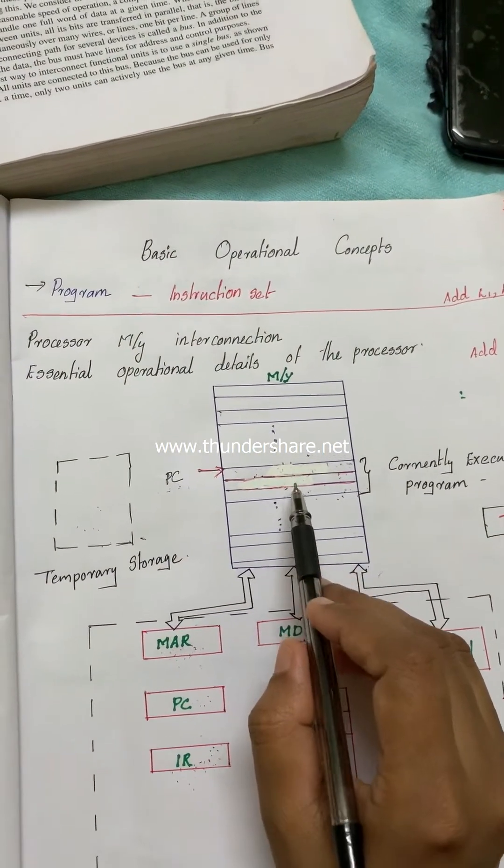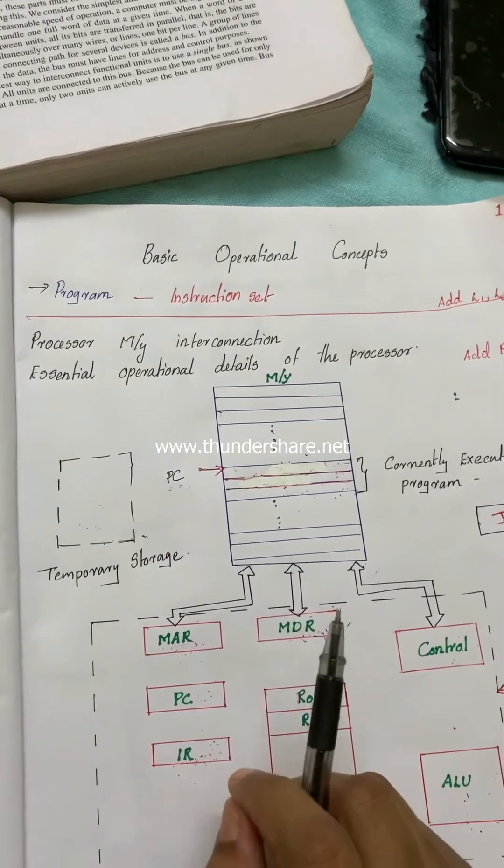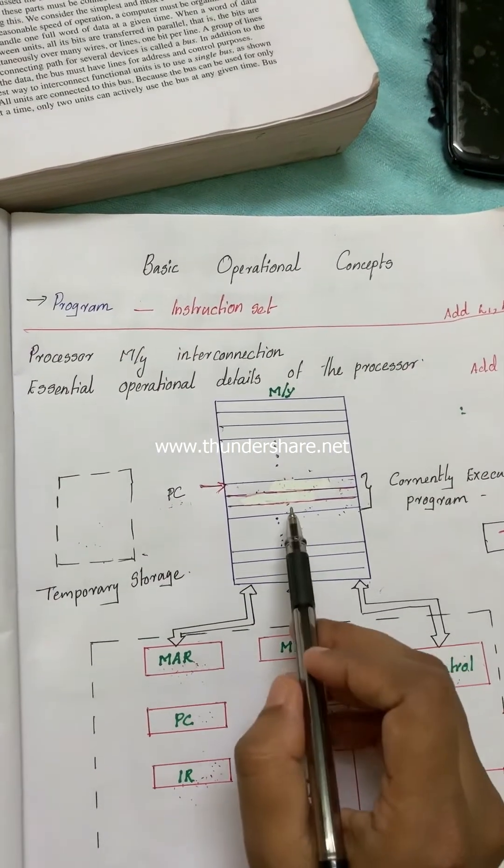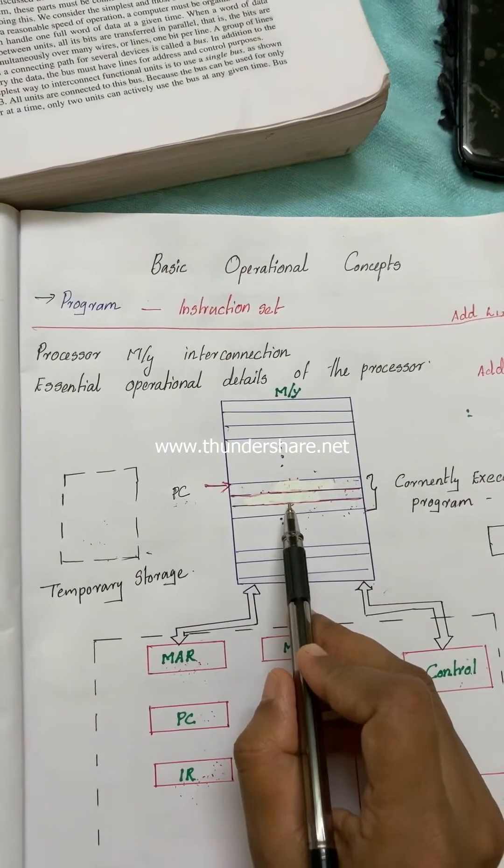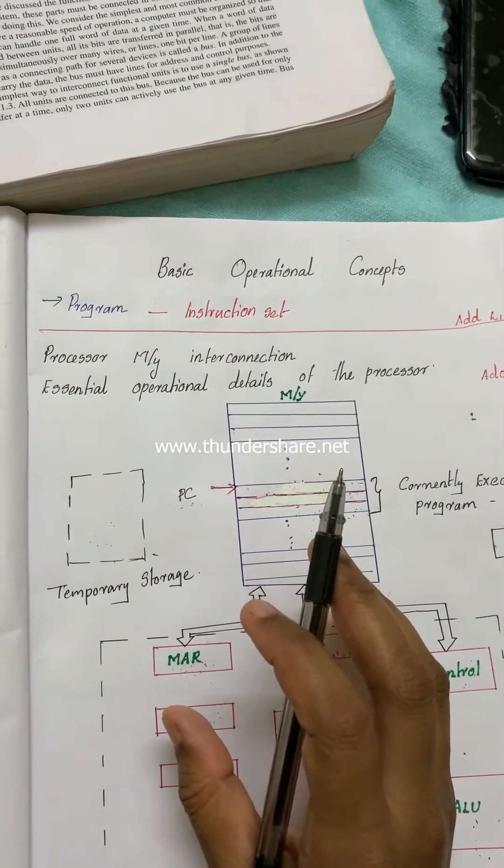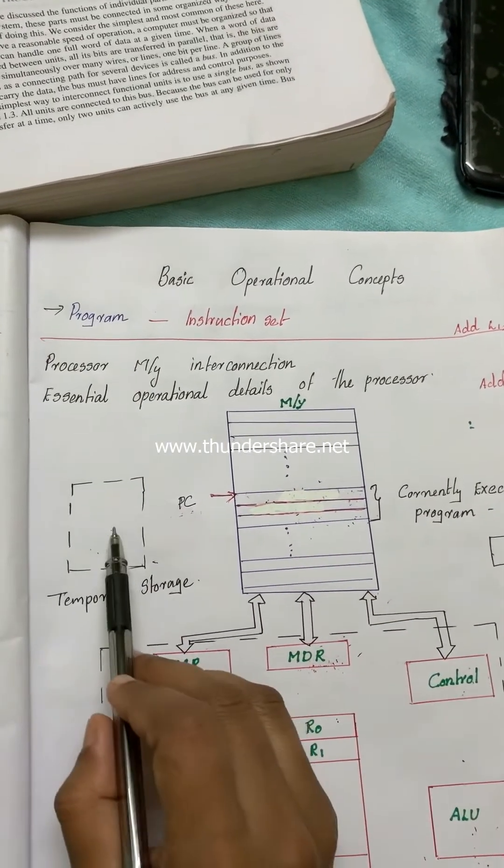The processor starts the execution of the interrupted program from where it stopped. So how is it possible? While stopping this program execution, the processor collects the program counter values and stores it somewhere.